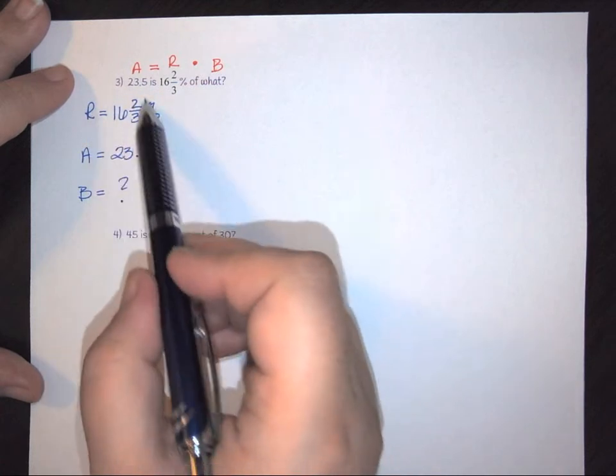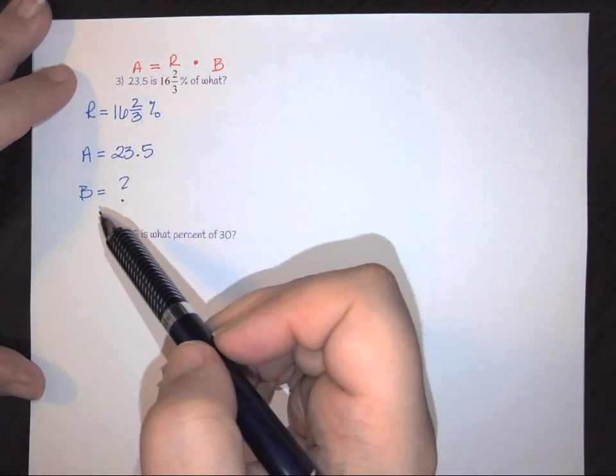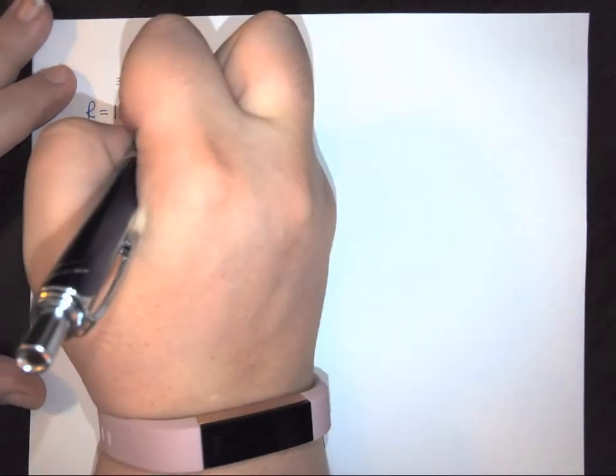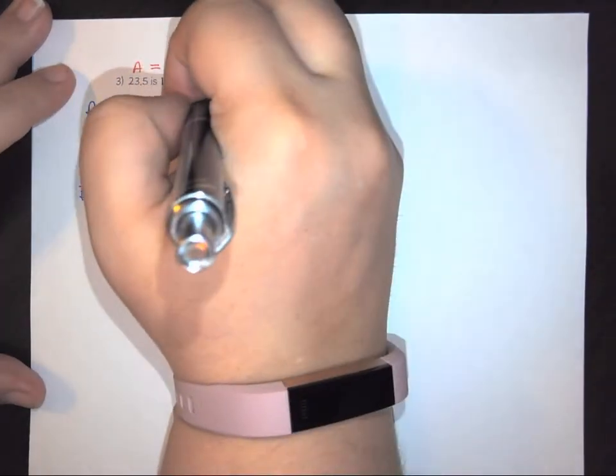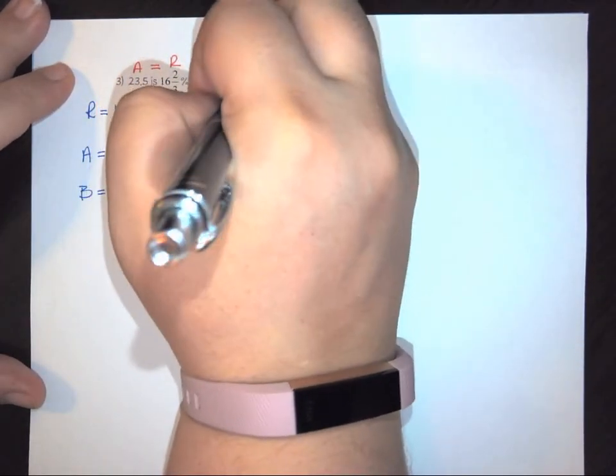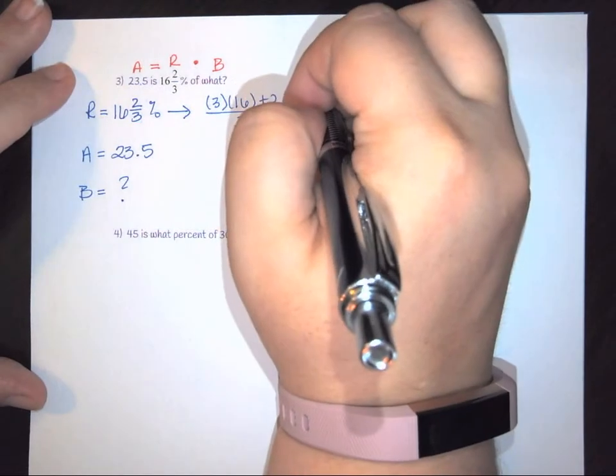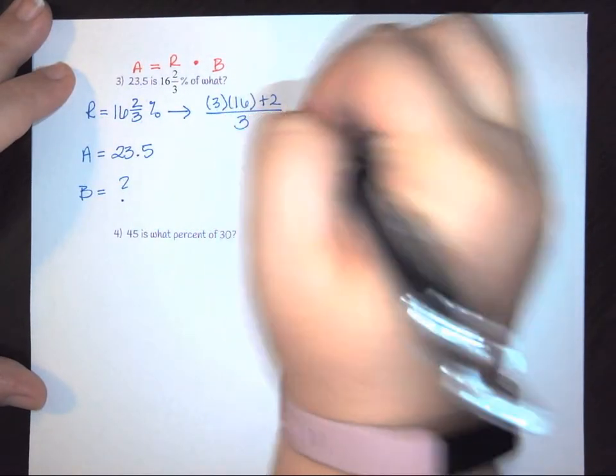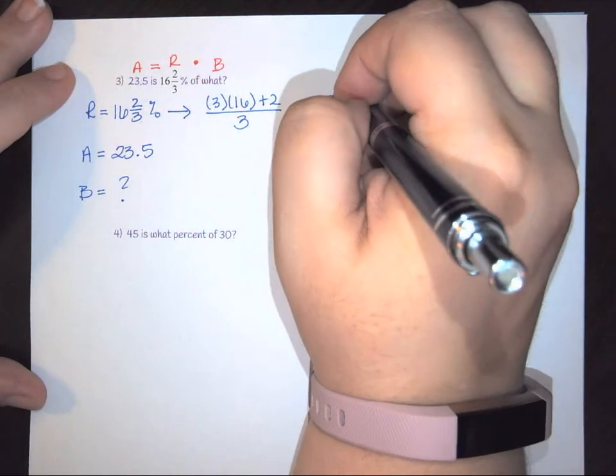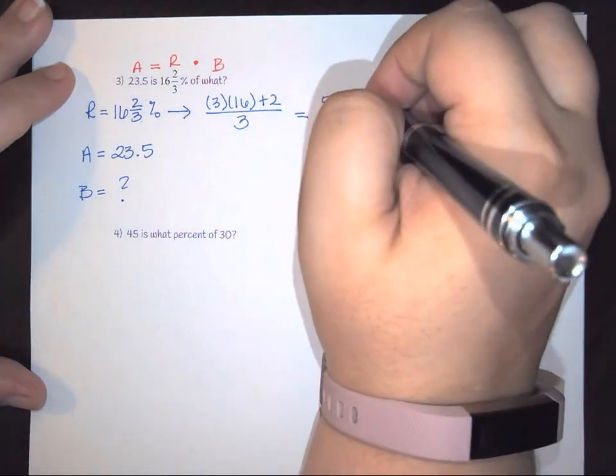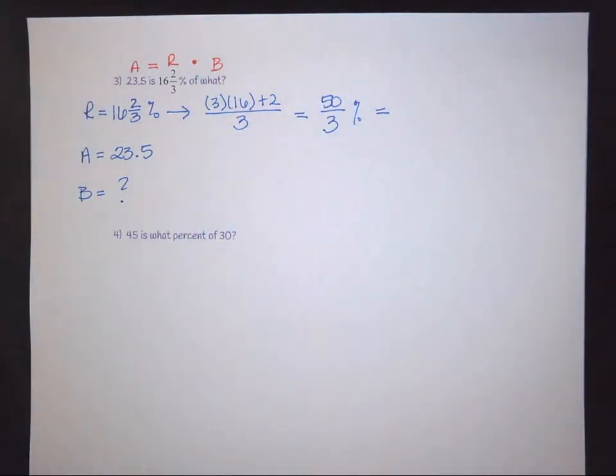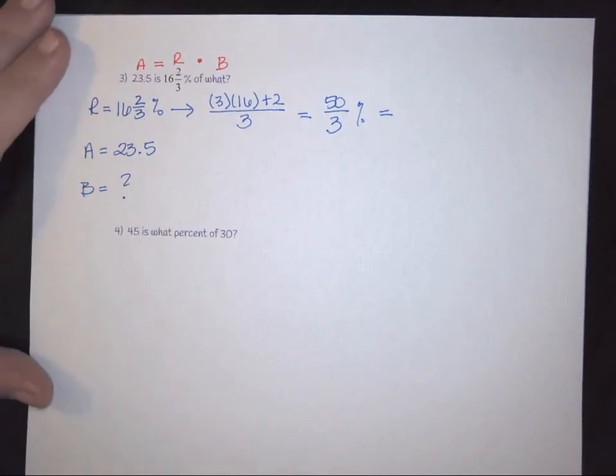So I have 16 and 2 thirds. So the first thing that I want to do is I need to be able to convert this to a decimal. So to do that, we need to change it over to its improper form. So we've got little number or bottom times the big number plus the top. Keep the bottom the same. So this is going to end up giving me 50 over 3. And so this is 50 over 3%.